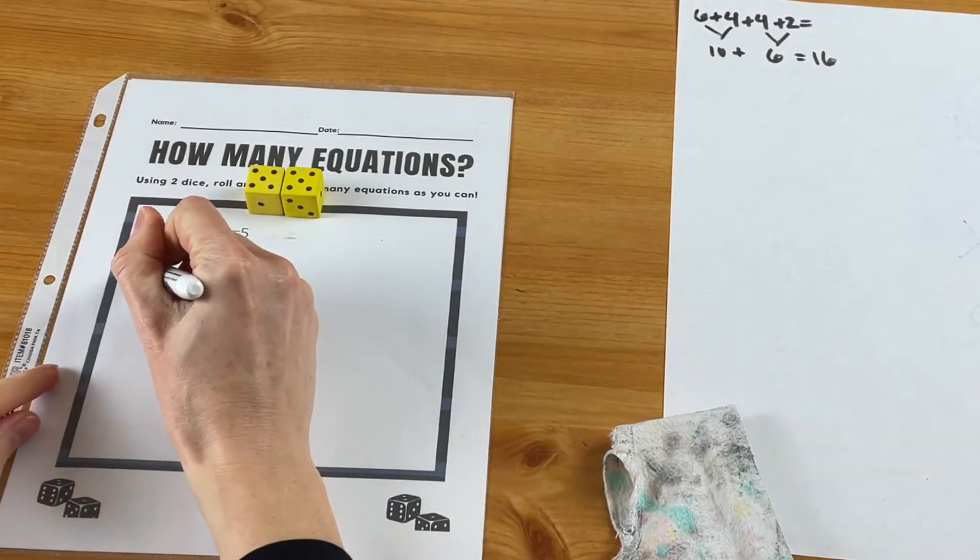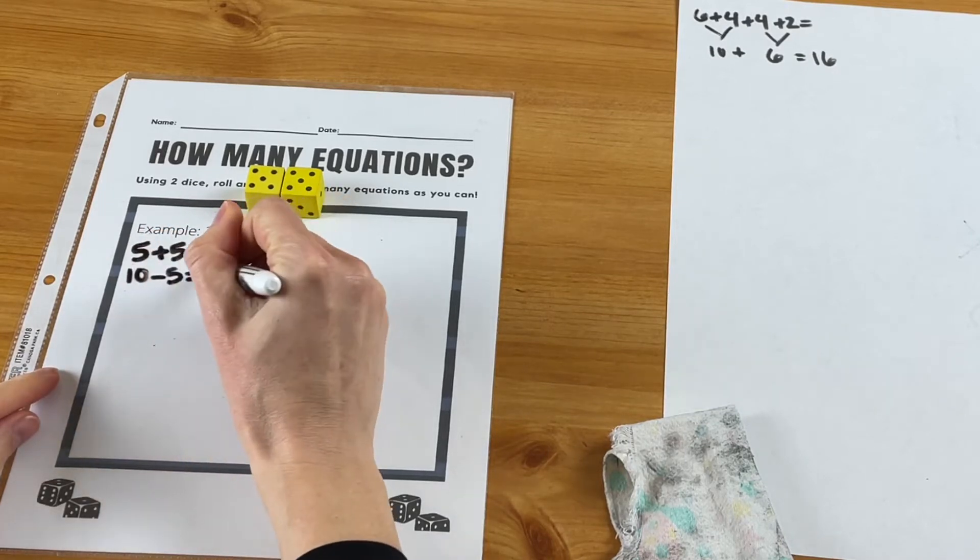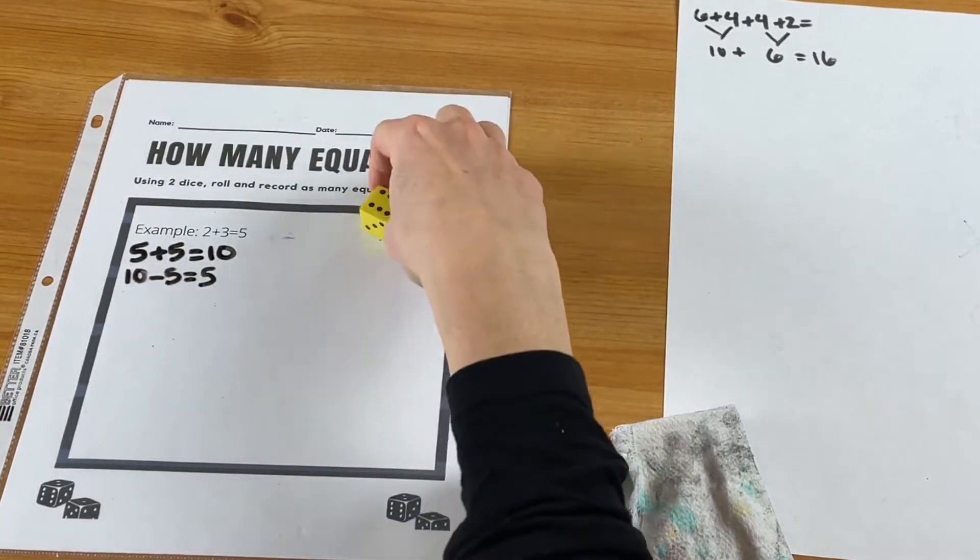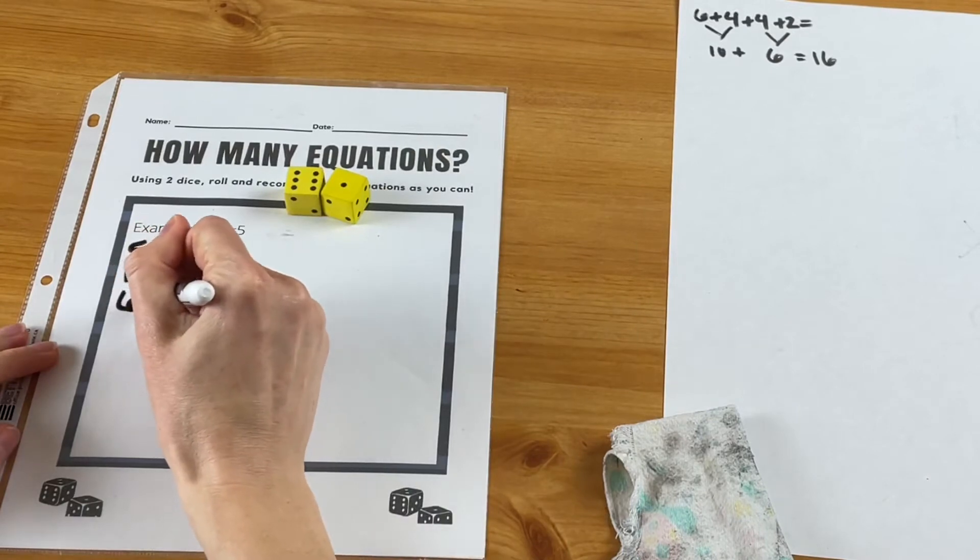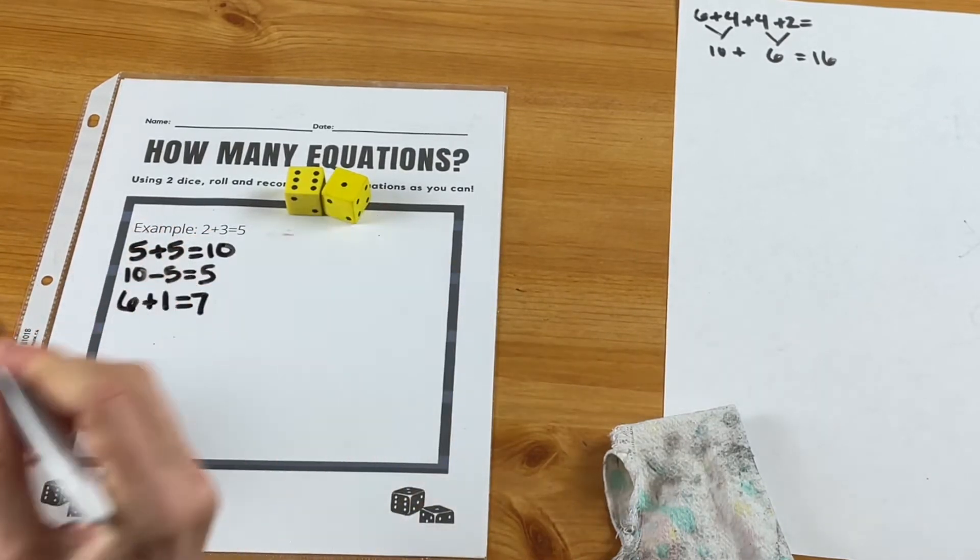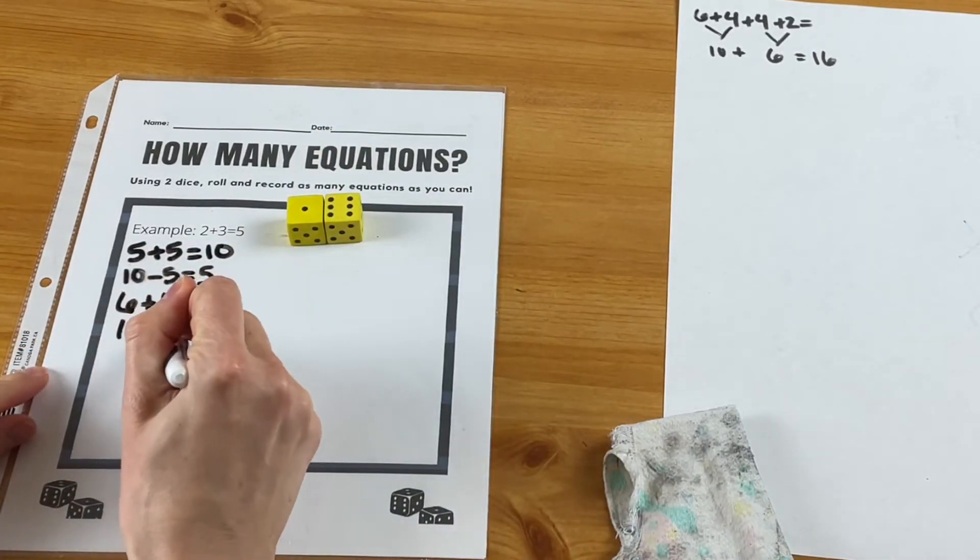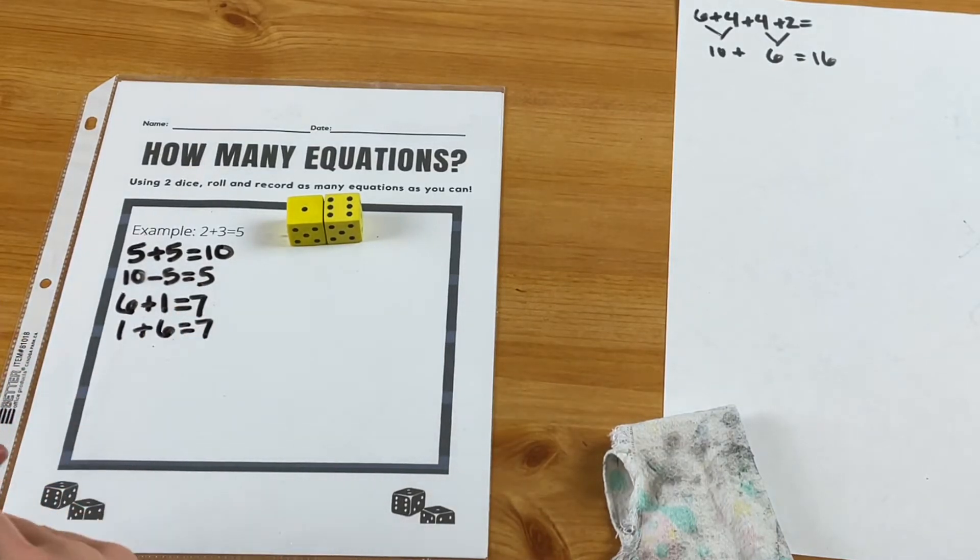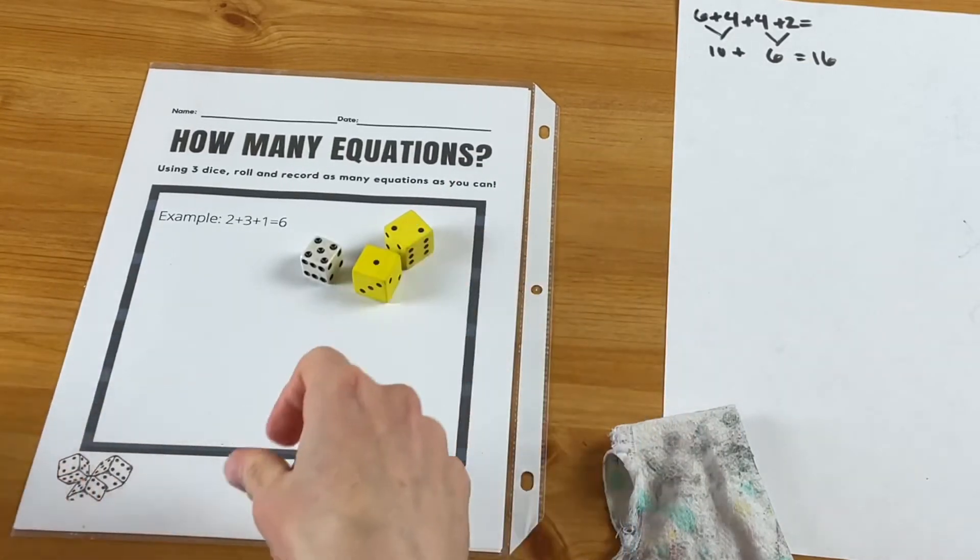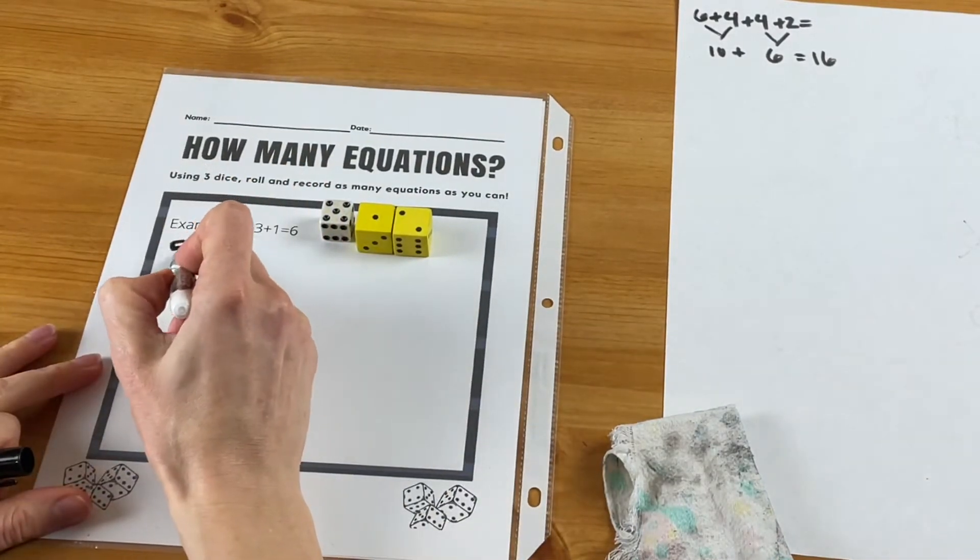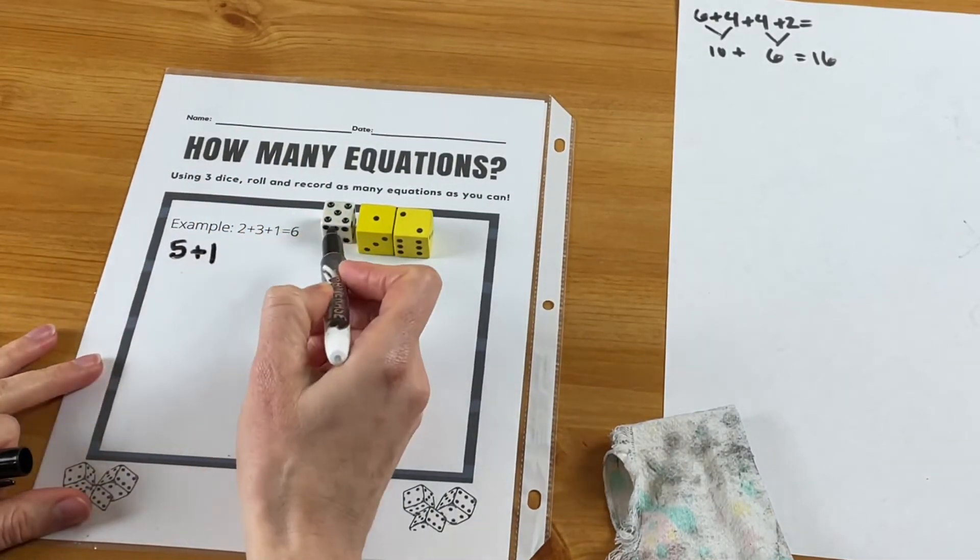Let's get something different. So we've got six and one equals seven, and then you might notice the turnaround facts so they could do one and six with the same sum, obviously. And then you can move into three dice.